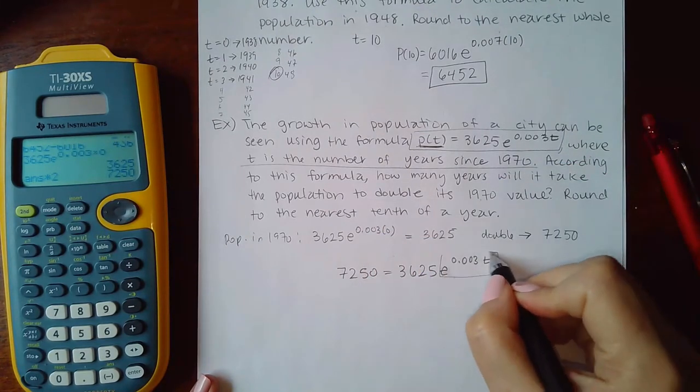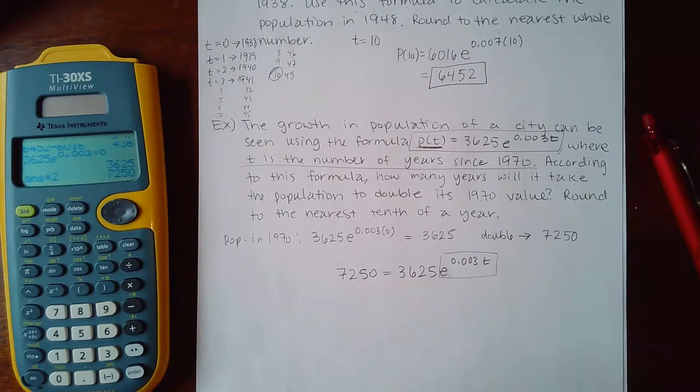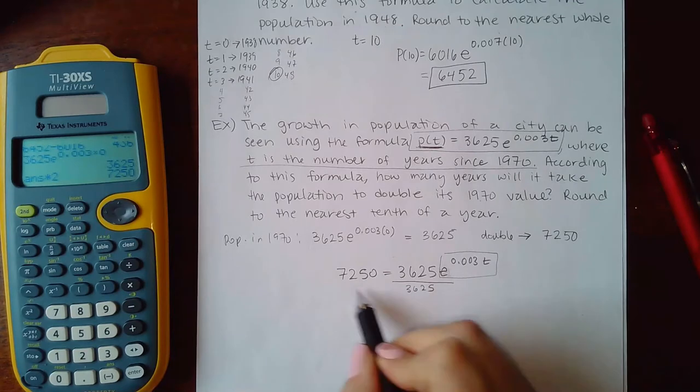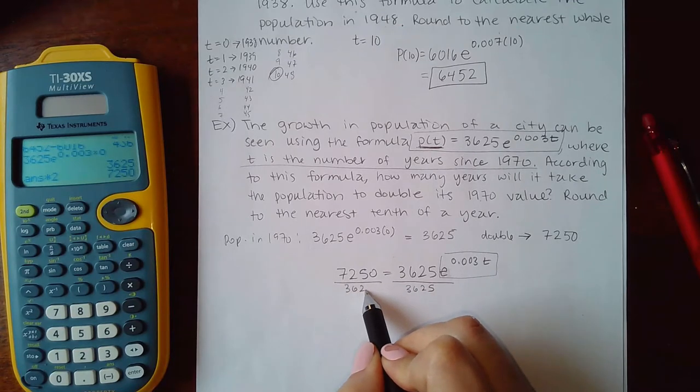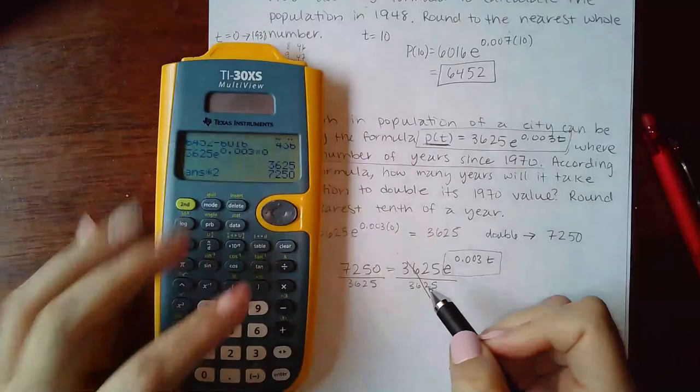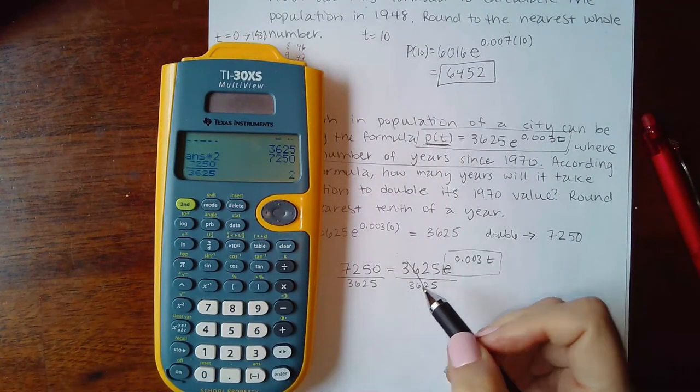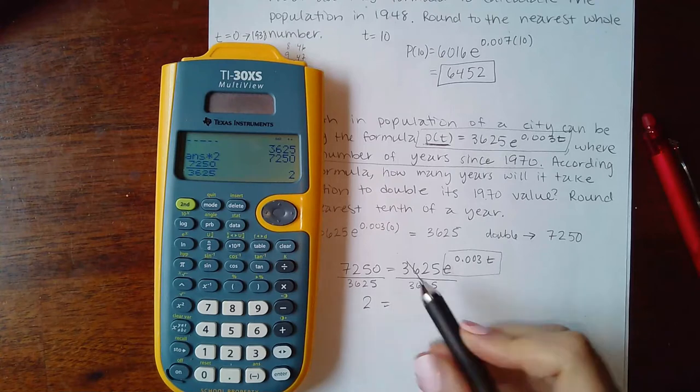It's right here, but in order for me to introduce the logs I'm going to have to get rid of the coefficient, which means I need to divide by that coefficient on both sides. Always keep your fractions here. So that's actually 2, which makes sense because it was double.